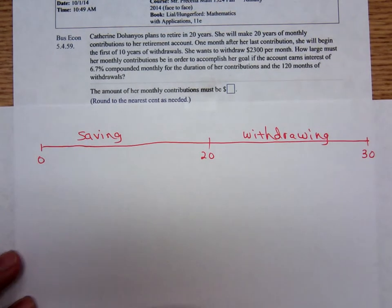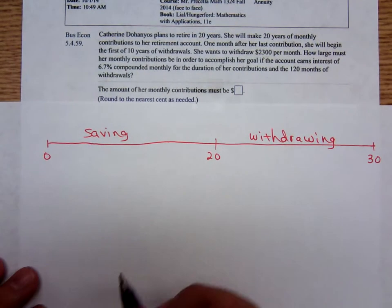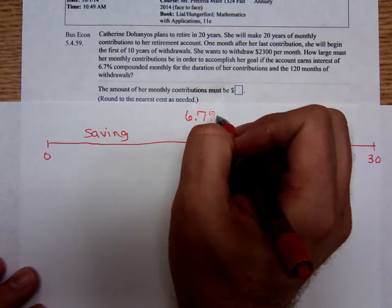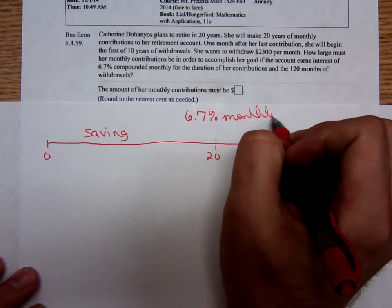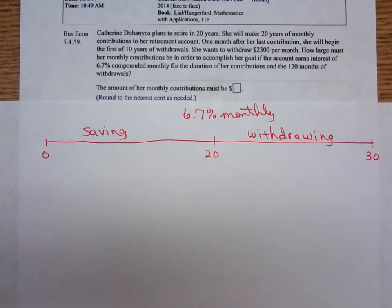And in both cases, she's getting a very good interest rate in this day and time, 6.7% compounded monthly. Of course it has to be compounded monthly because she's making her contributions monthly and she's withdrawing the money monthly. Remember the payment period has to be the same as the compound period.